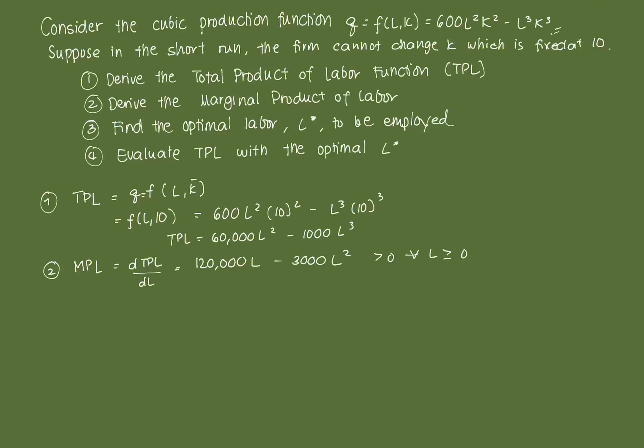Notice that is greater than 0 for all values of L greater than or equal to 0, which suggests that the marginal product of labor is indeed positive. What does that mean? If I increase my utilization of labor by one unit, that will increase the production process in this case. Now, the third point here says find the optimal labor to be employed.